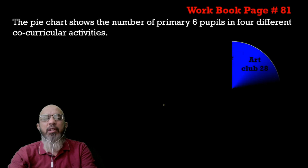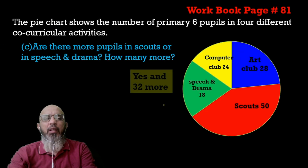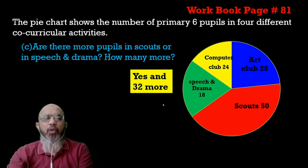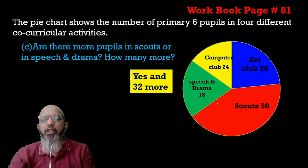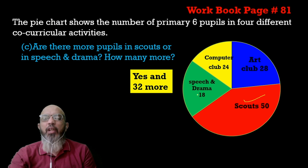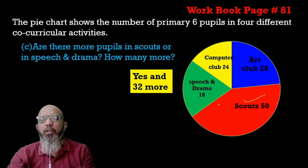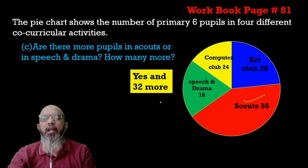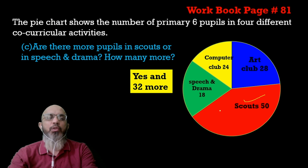Now the part c of the same question: are there more pupils in scouts than in speech and drama, and if so, how many more? It is clearly visible that scouts has more than speech and drama. So if we subtract 18 from 50 we get 32 — meaning 32 more students chose scouts than speech and drama.